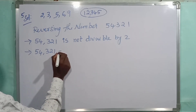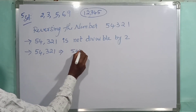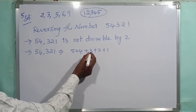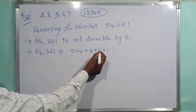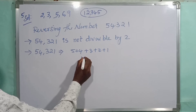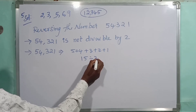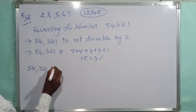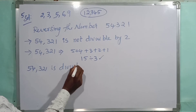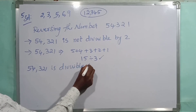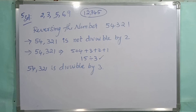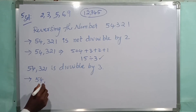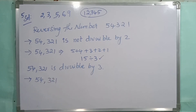Next, divisibility by 3 for 54321: the sum of the digits should be divisible by 3. So 5+4+3+2+1 = 15. Is 15 divisible by 3? Yes. So 54321 is divisible by 3.